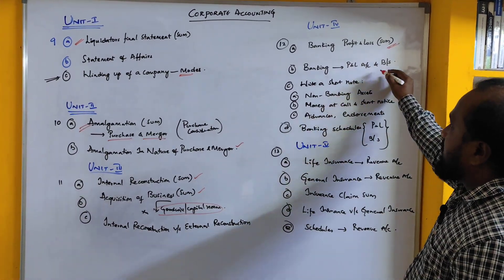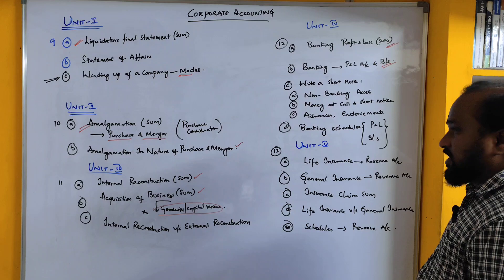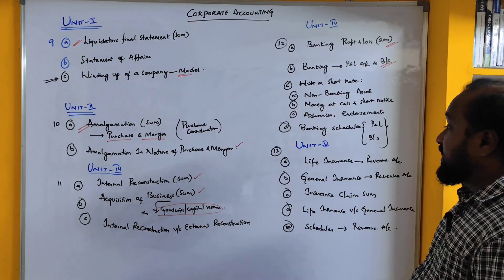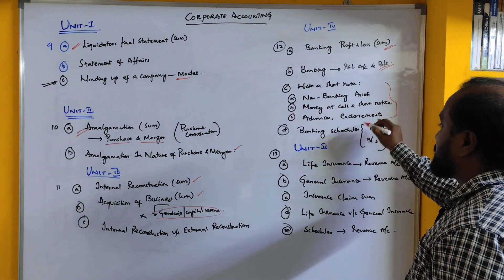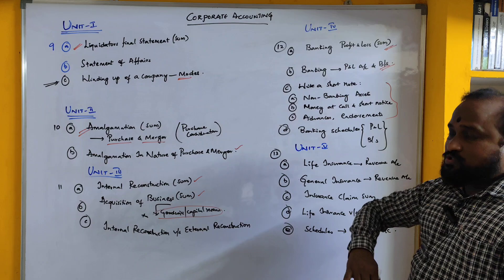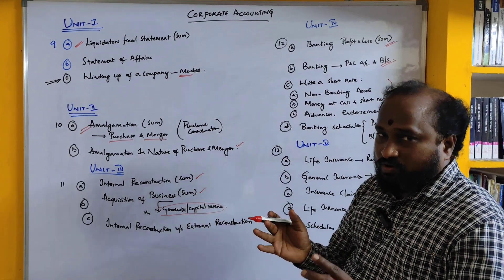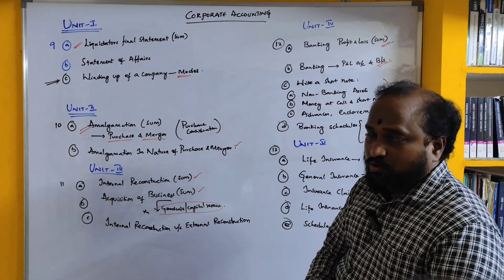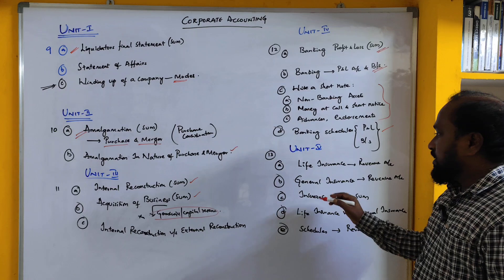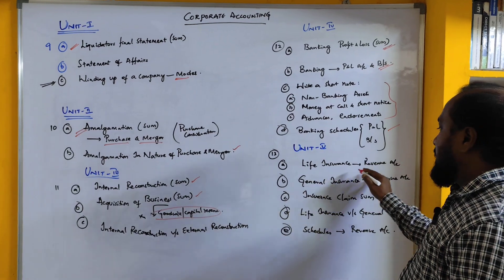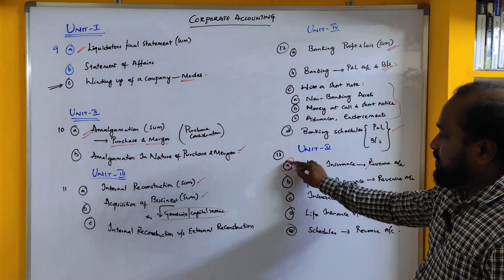The banking profit and loss account along with balance sheet is asked many times. Prepare the theory questions, and specifically prepare banking schedules — only schedules, not just profit and loss and balance sheet. From Unit Number 5, the life insurance revenue account is one of the very important things to prepare.